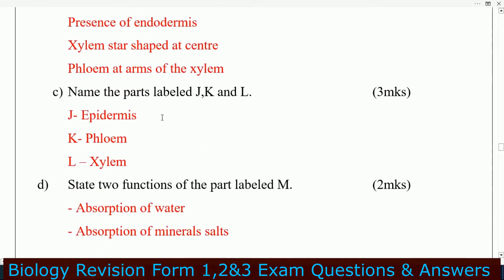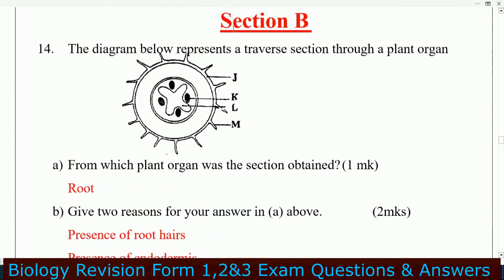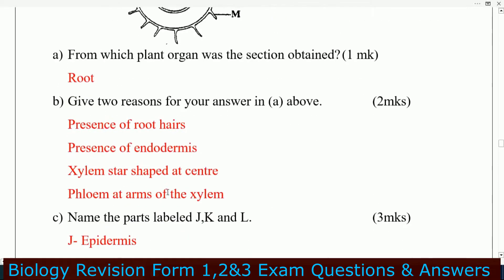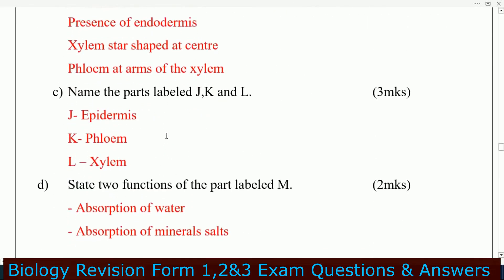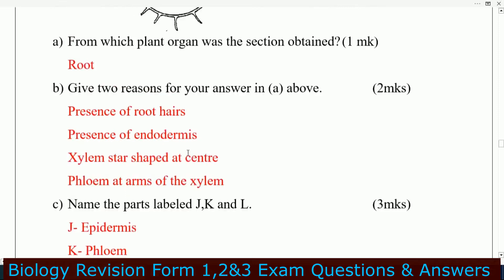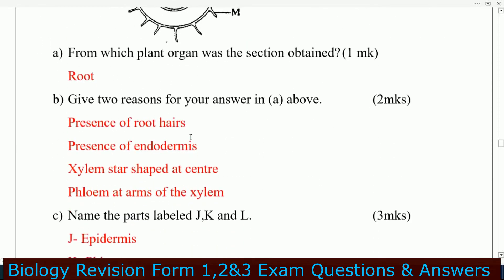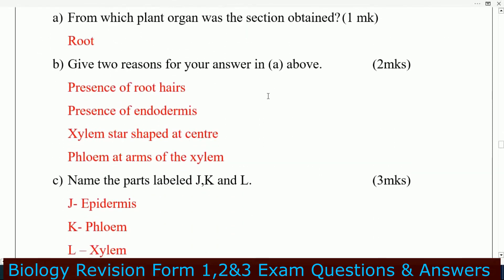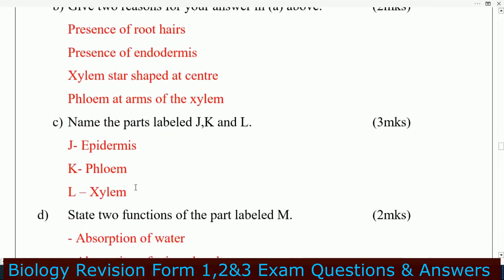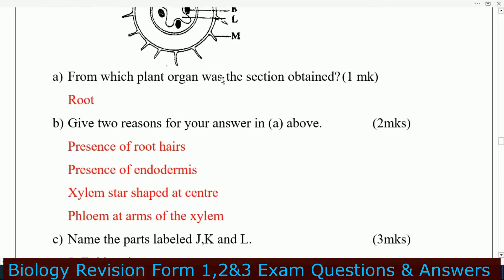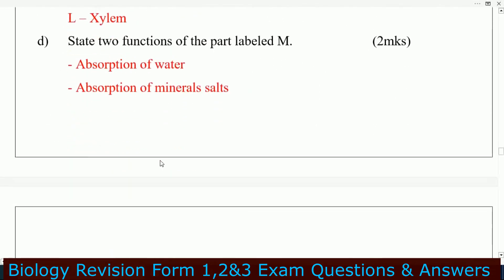Name the parts labeled J, K, and L: J is the epidermis, K is phloem, and L is xylem.